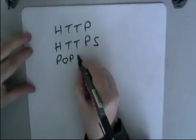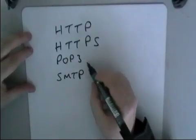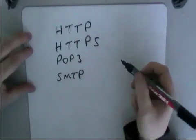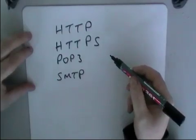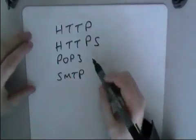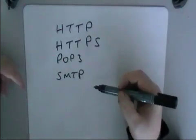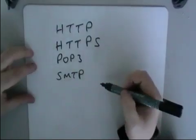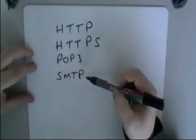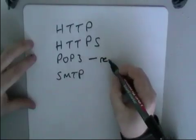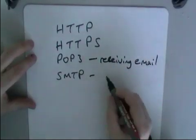We've also got POP3 and SMTP. You might be less familiar with those. POP3 is an email protocol for receiving emails. So if you've got an online account like Gmail or Hotmail, and you've also got a program like Outlook, Thunderbird, or Mail that you use on your desktop to read your emails, they'll be sent from the web server to your computer using the POP3 protocol. SMTP is the Send Mail Transfer Protocol, and that's what you use when you send email. So POP3 is for receiving email, and SMTP is for sending email.